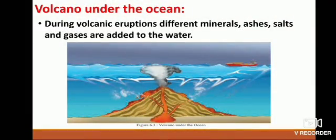Volcanoes under the ocean: during volcanic eruptions, different minerals, ashes, salts and gases are added to the water, because of this the salt level in the ocean increases. The salinity of ocean water is different at different places. Salinity is expressed in terms of mils (particles per thousand). The average salinity of oceanic water is 35 mils.